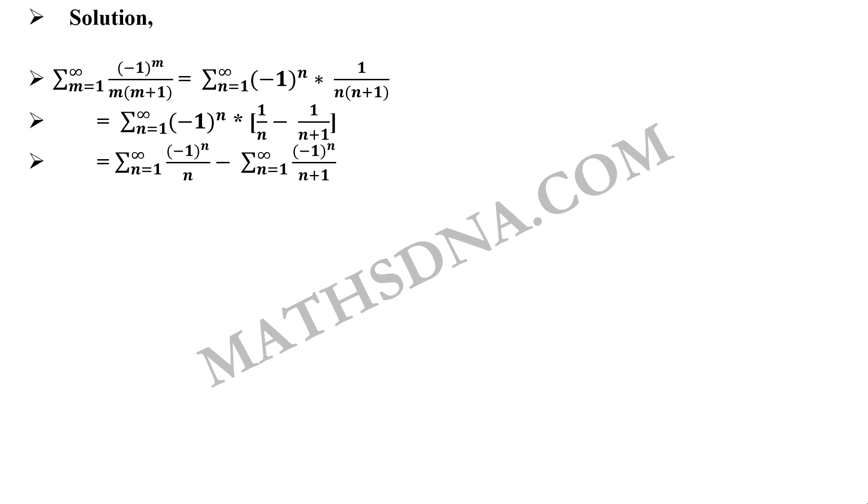Now the result that is given to us has minus 1 raise to n plus 1, and on the left hand side term we have just minus 1 raise to n. So 1 minus 1 is missing.